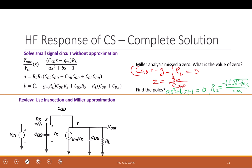what we get is P1 equals to 1 over RS times CGS plus CGD times 1 plus gm RD.